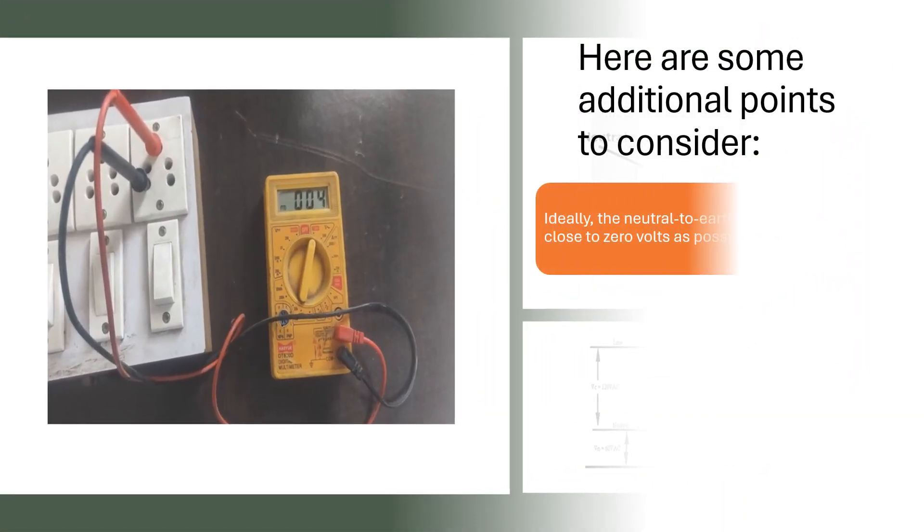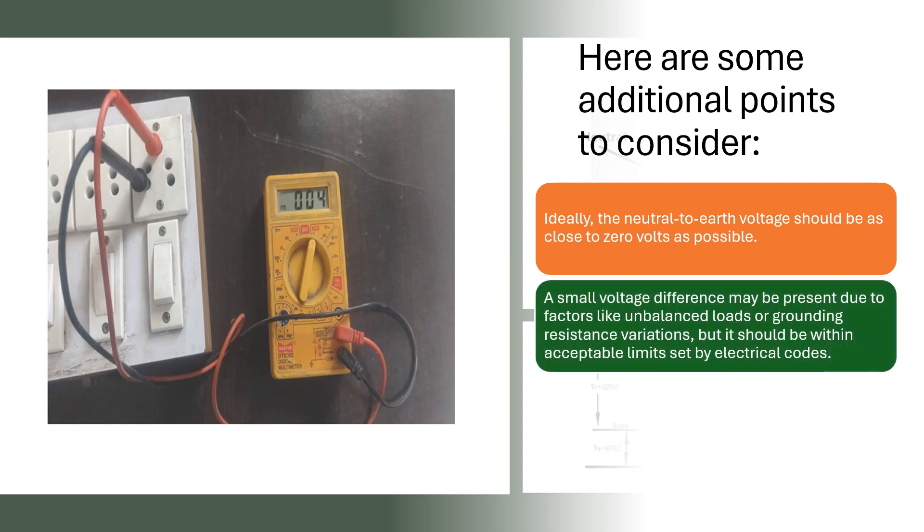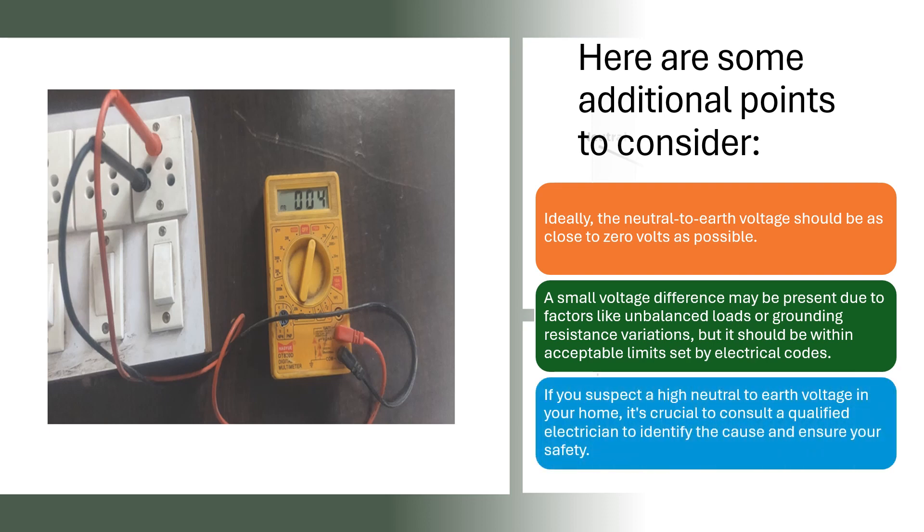Ideally, the neutral to earth voltage should be as close to zero volts as possible. A small voltage difference may be present due to factors like unbalanced loads or grounding resistance variations, but it should be within acceptable limits set by electrical codes. If you suspect a high neutral to earth voltage in your home, it's crucial to consult a qualified electrician to identify the cause and ensure your safety.